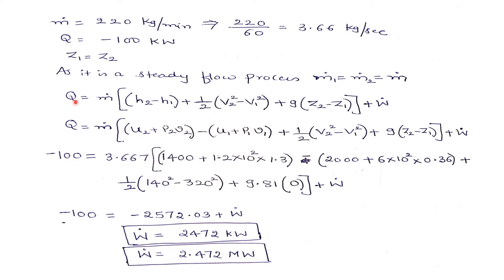Let me write the steady flow energy equation: Q equals M dot times (H2 minus H1) plus 1/2(V2² minus V1²) plus g(Z2 minus Z1) plus W. We neglect the potential energy term. Since enthalpy values are not given, I can write enthalpy in terms of internal energy: H2 is U2 plus P2V2, and H1 is U1 plus P1V1.